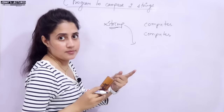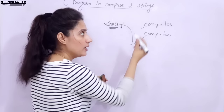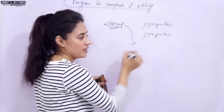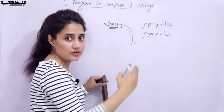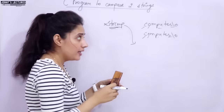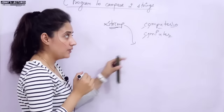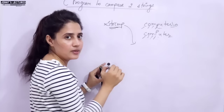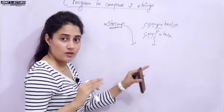The first character of string one is compared with the first character of string two. If both are equal, move to the next character. This continues character by character until the null character. If somewhere, say, 'p' is capital in one string and lowercase in the other, it will compare up to that point, find they are not the same, stop comparing, and return that strings are not equal. This character-by-character comparison is also known as lexicographic comparison.